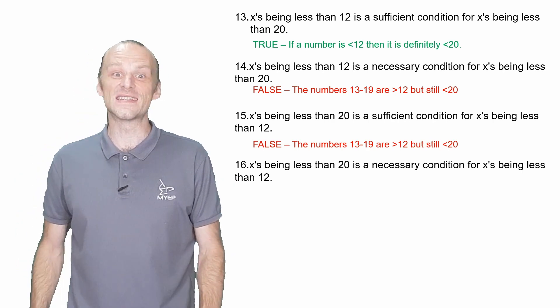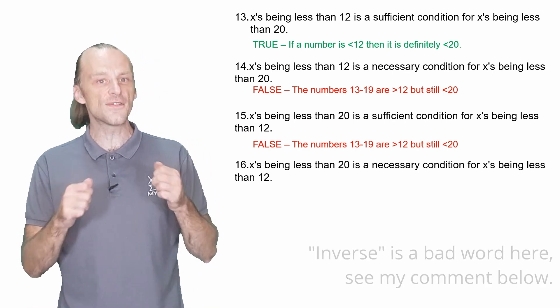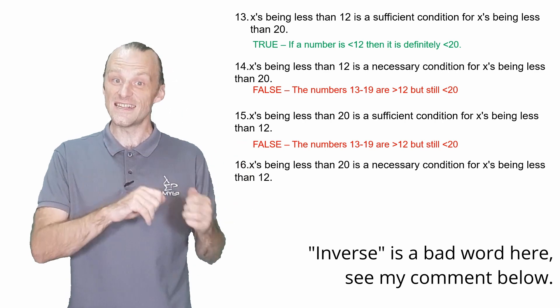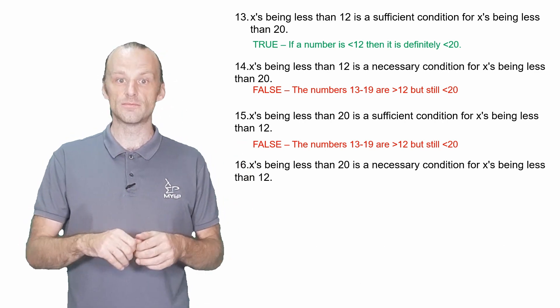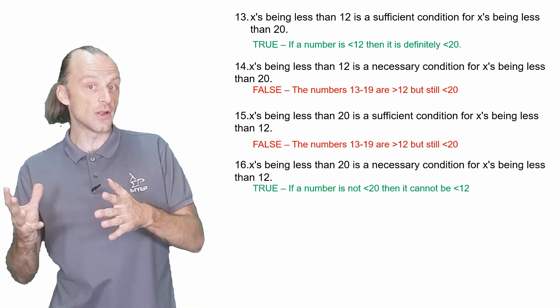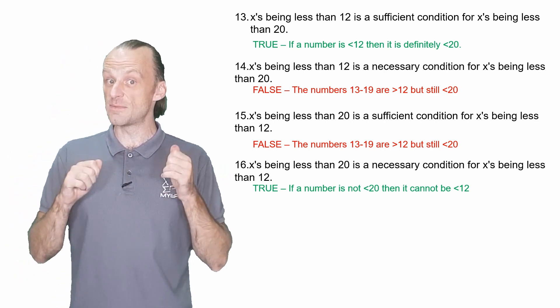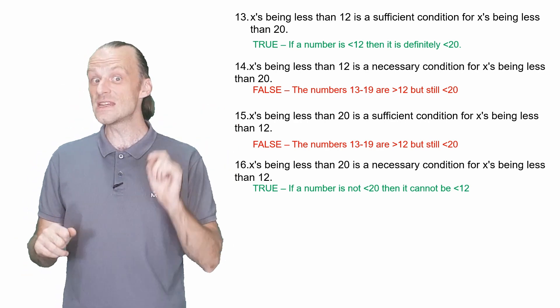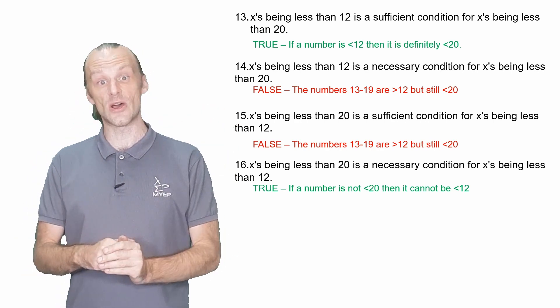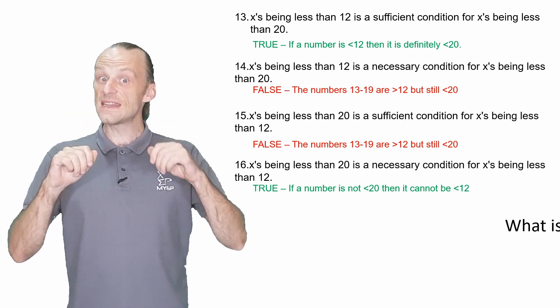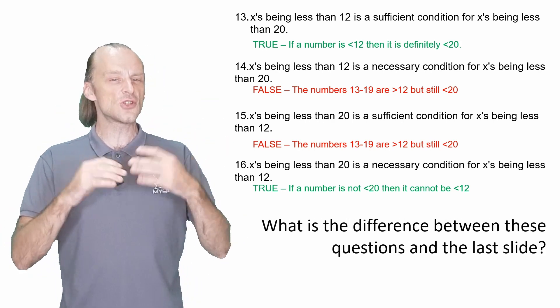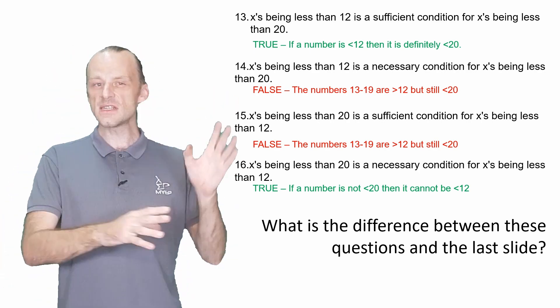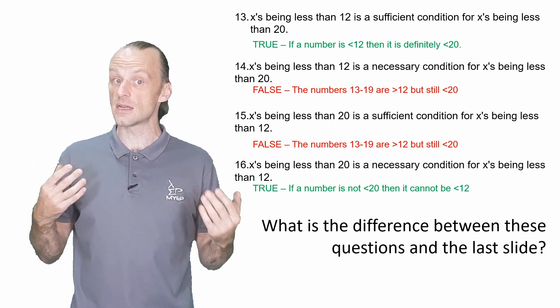And maybe you can see where this is going for number 16. It's the inverse of number 13. Is X being less than 20 necessary for X to be less than 12? Yeah. If A is false, B is guaranteed to be false. In other words, if a number is not less than 20, then that guarantees that it is not less than 12. Again, I'm not saying these are the best explanations for these examples. I'm just using a very quick line to show that these come in pairs.